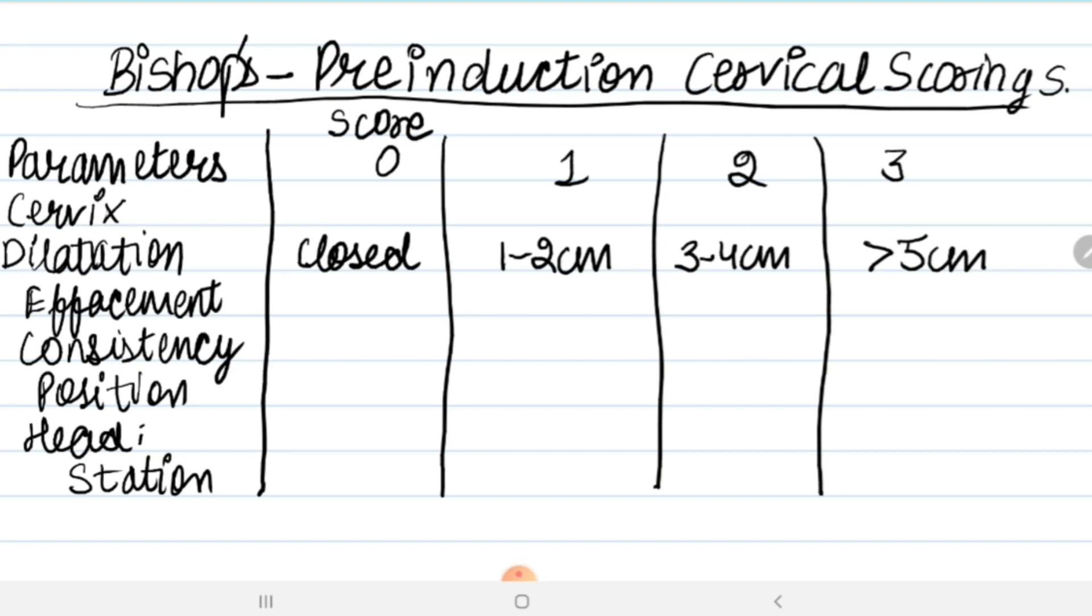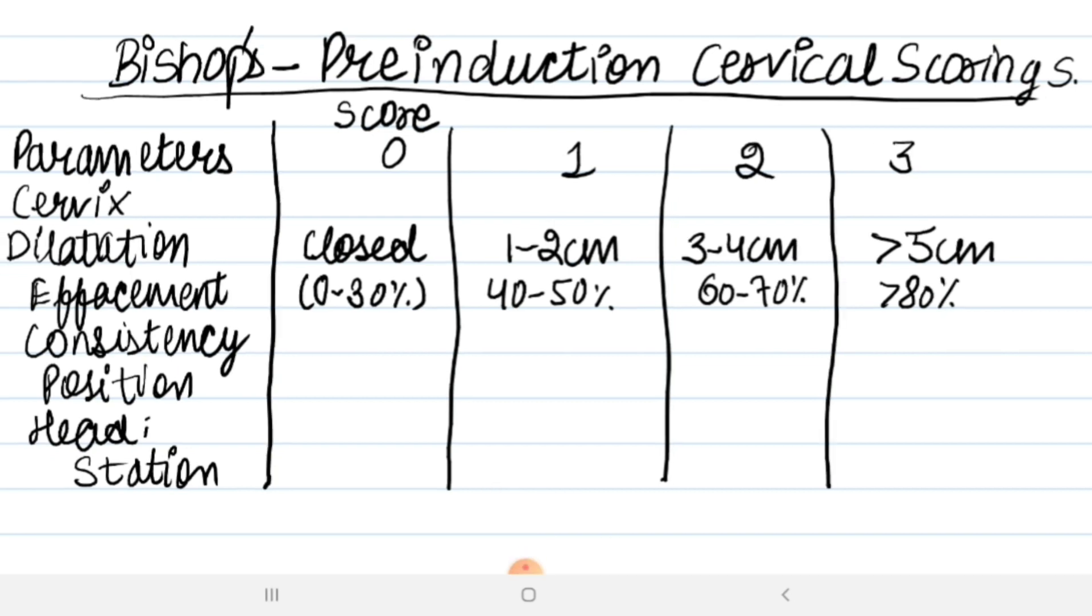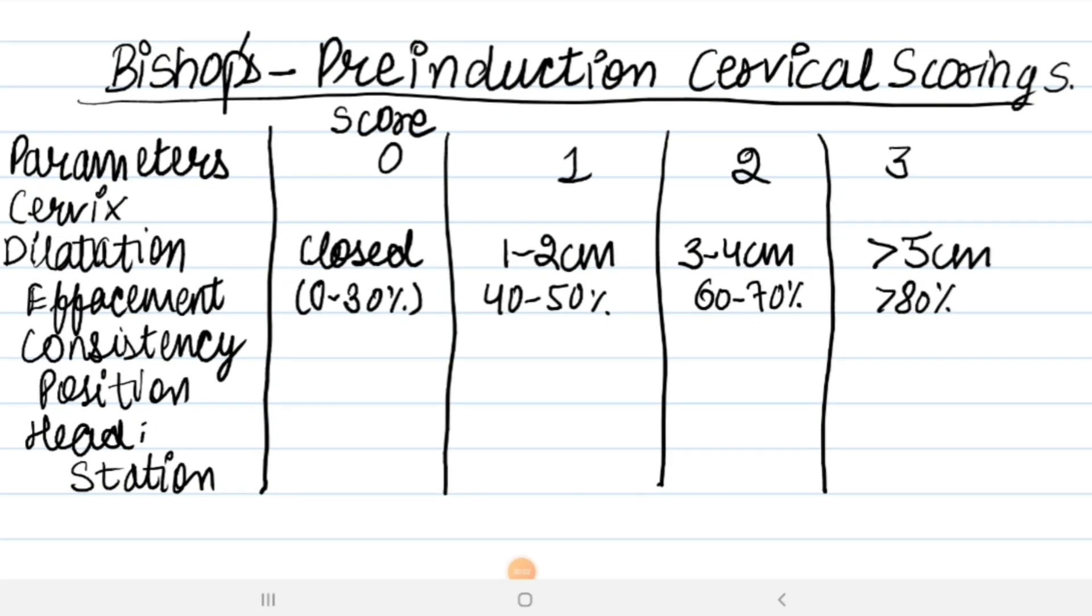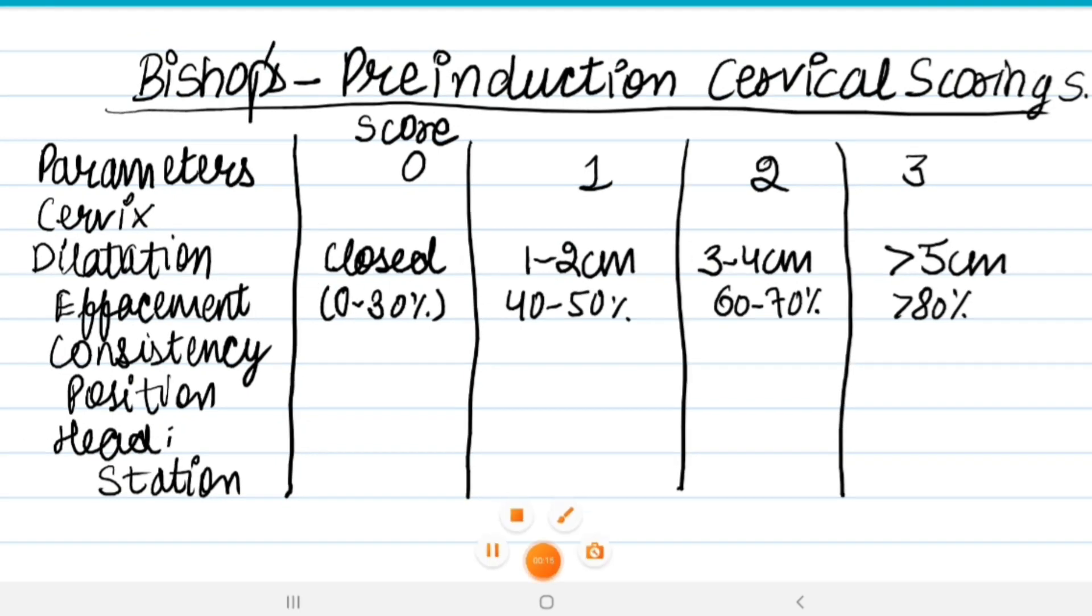Next is effacement. If the effacement of cervix is 0 to 30 percent, the score is 0. 40 to 50 percent effacement, score is 1. 60 to 70 percent effacement, score is 2. And more than 80 percent effacement, the score is 3. Effacement means thinning of the cervix. As labor nears, the cervix may start to thin or stretch and open, meaning dilate.